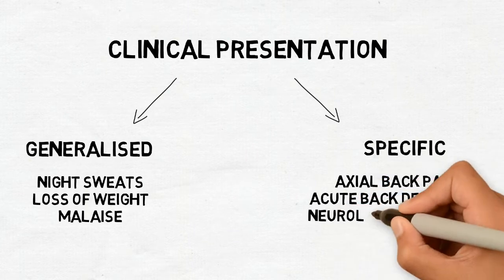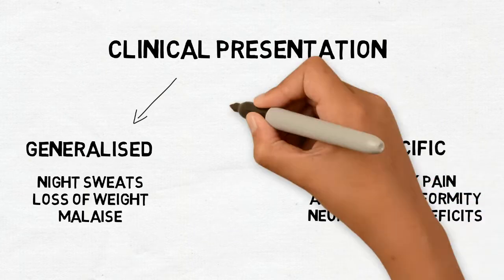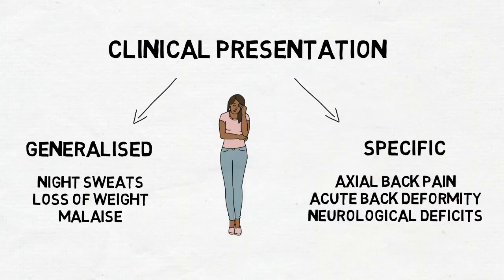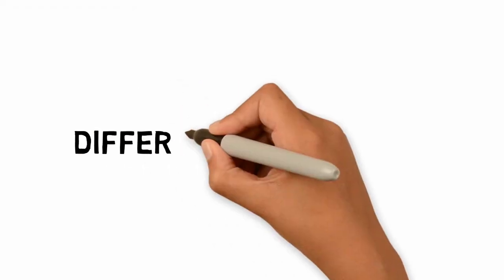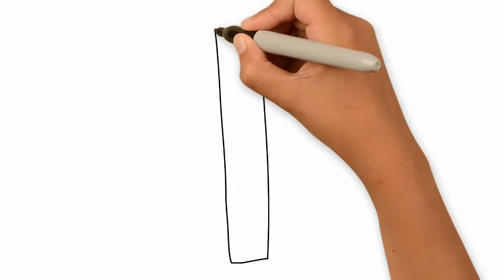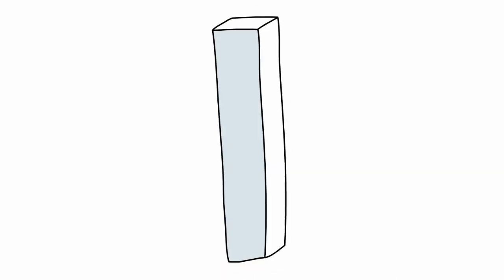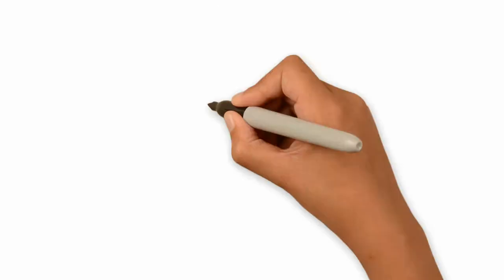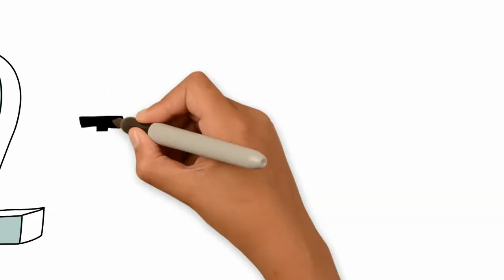The onset of symptoms in TB Spine is typically more insidious than in pyogenic infection. Differential diagnosis of TB Spine includes pyogenic spondylodiscitis, tumour, and congenital kyphosis due to hemivertebra.